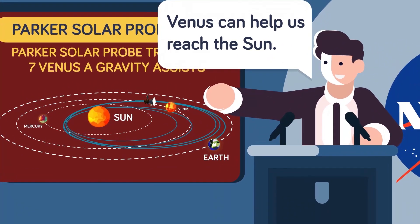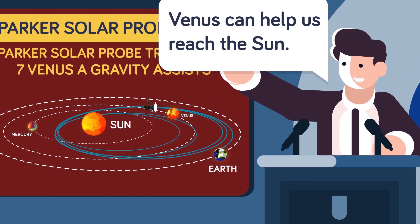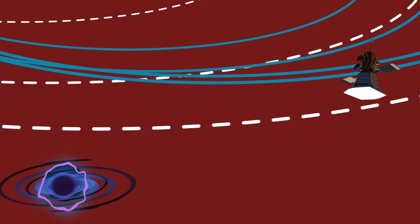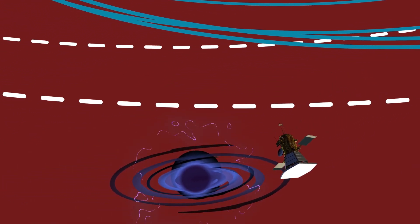Gravity assists help spacecraft increase or slow down their momentum. To put it simply, the craft swings around the planet to get a velocity boost from the planet's gravity and angular momentum. If the craft swings around the planet in a direction opposite to the planet's orbit, it loses momentum instead.